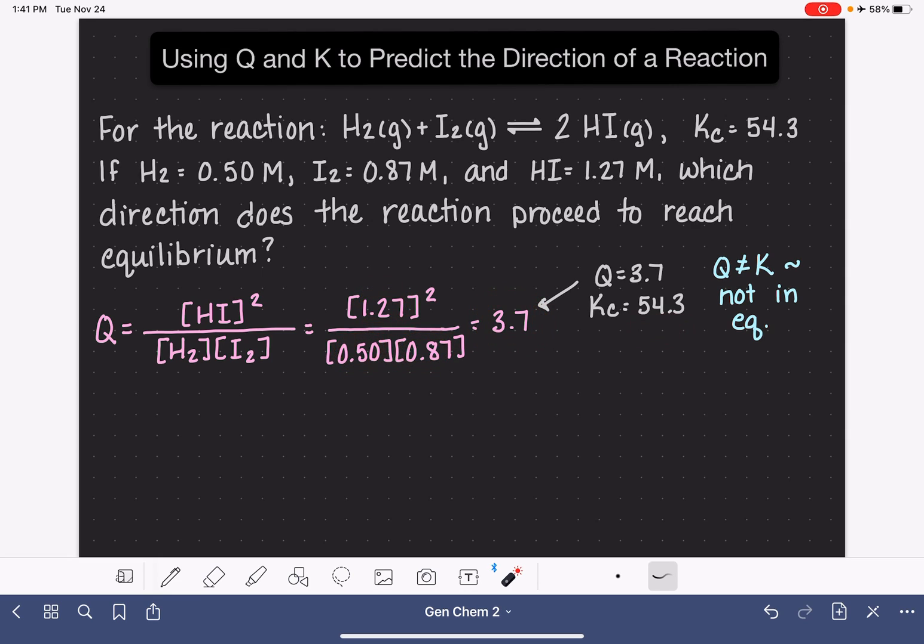So mathematically, what do we need to do to these numbers to get this 3.7 higher up to 54.3? Well, this is just a simple fraction, so we can apply what we know about fractions to help us make this prediction.